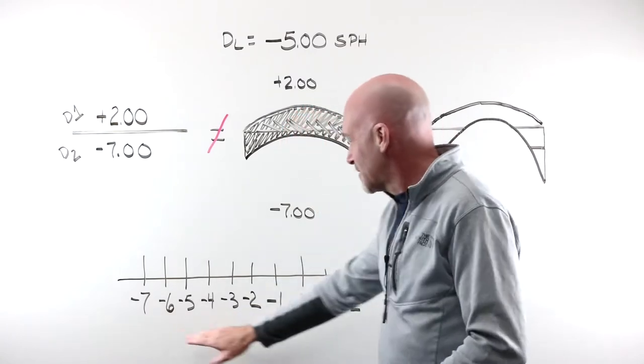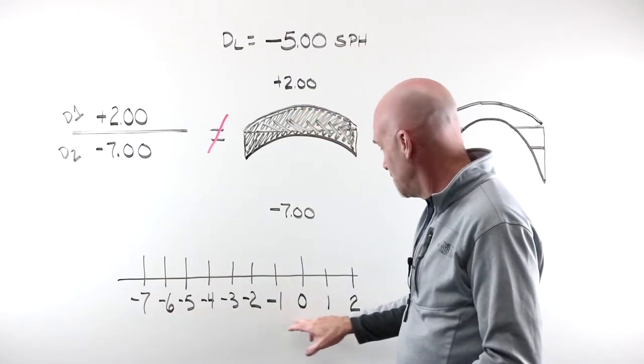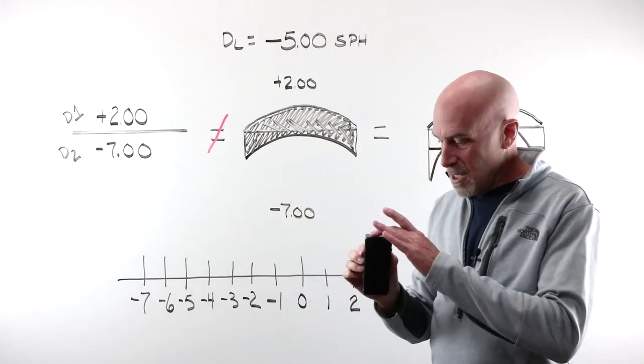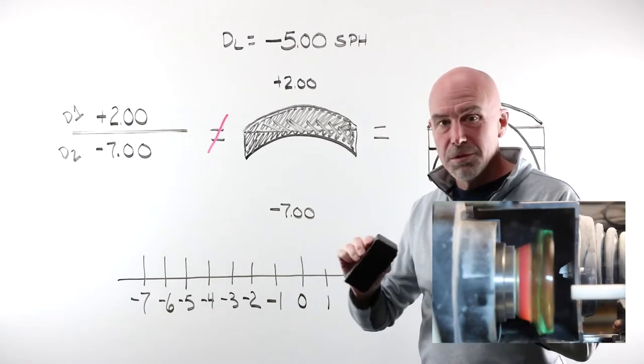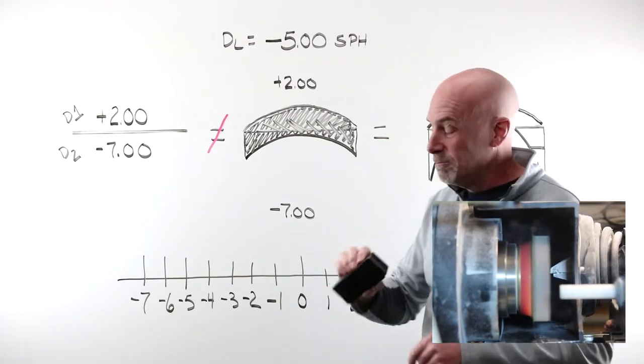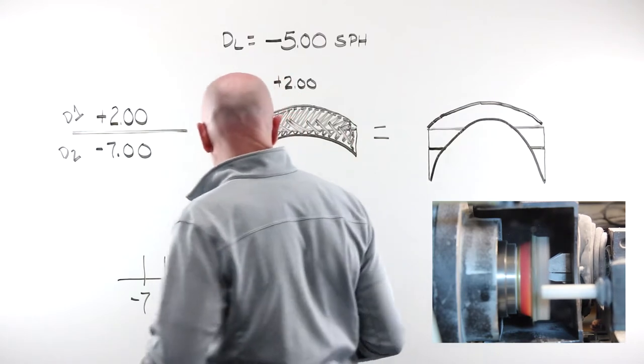Here's my number line: seven, six, five, four, three, two, one, zero, one, two. If this is my stylus, this is the cutting tool that comes in on the back of the lens blank, and is grinding away the material to create my minus five.